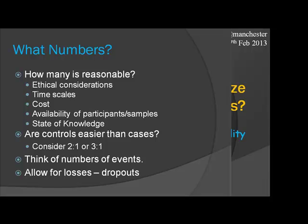In a case-control or randomised study, sometimes it's easier to get controls than cases, in which case you do get more power by putting more controls in. The optimum in terms of total number is equal allocation, but if one group is easier to get, you can gain power by adding more of them.